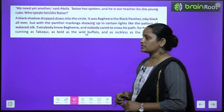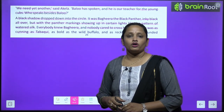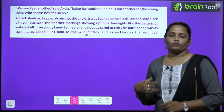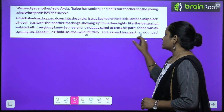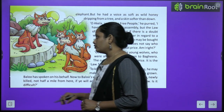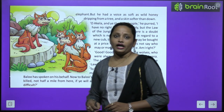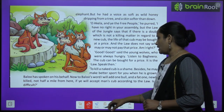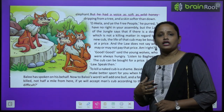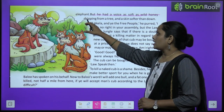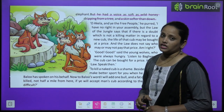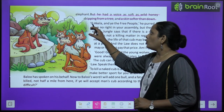For he was as cunning as Tabaki — woh bahut zyada cunning tha, Tabaki ki tarah — as bold as a wild buffalo, and as reckless as the wounded elephant. But he had a voice as soft as wild honey — uski awaaz bahut hi soft thi, honey ki tarah — and a skin softer than down.